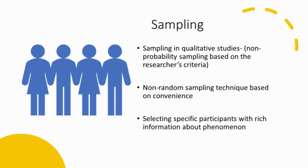It's also important that they obtain an in-depth and rich detail of the topic that they are exploring. So when it comes to sampling and obtaining participants for qualitative studies, it's not based on chance. The researcher would often have a specific set of criteria to make sure that the participants involved in the study can provide rich and in-depth information about the particular topic they are exploring.